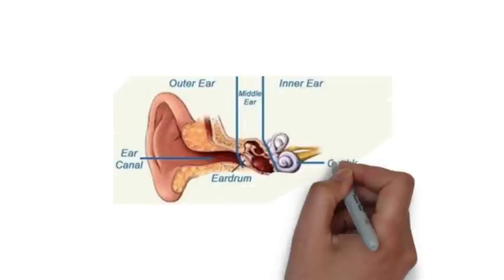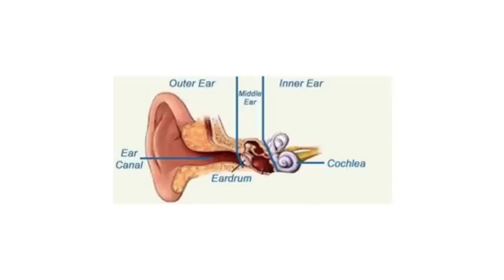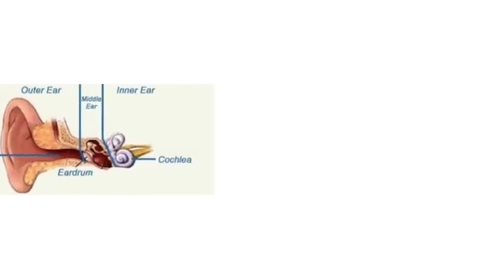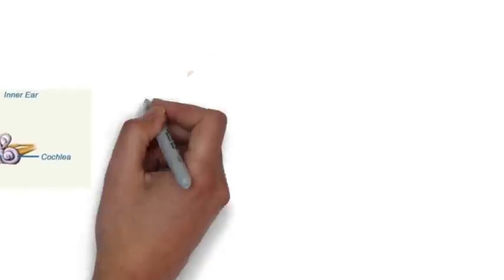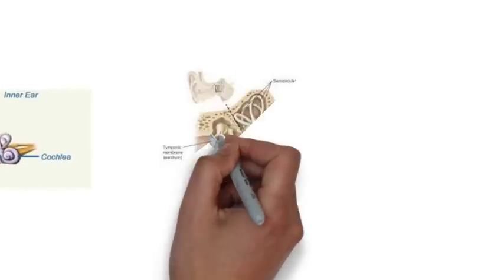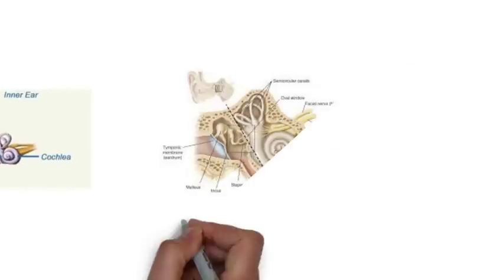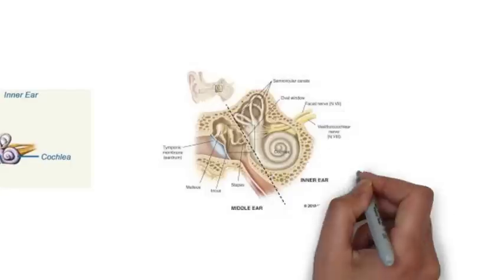The inner ear is composed of the cochlea and vestibular system. The cochlea is responsible for hearing by responding to sounds in the form of vibration. The vestibular system is responsible for the coordination of movement with balance.